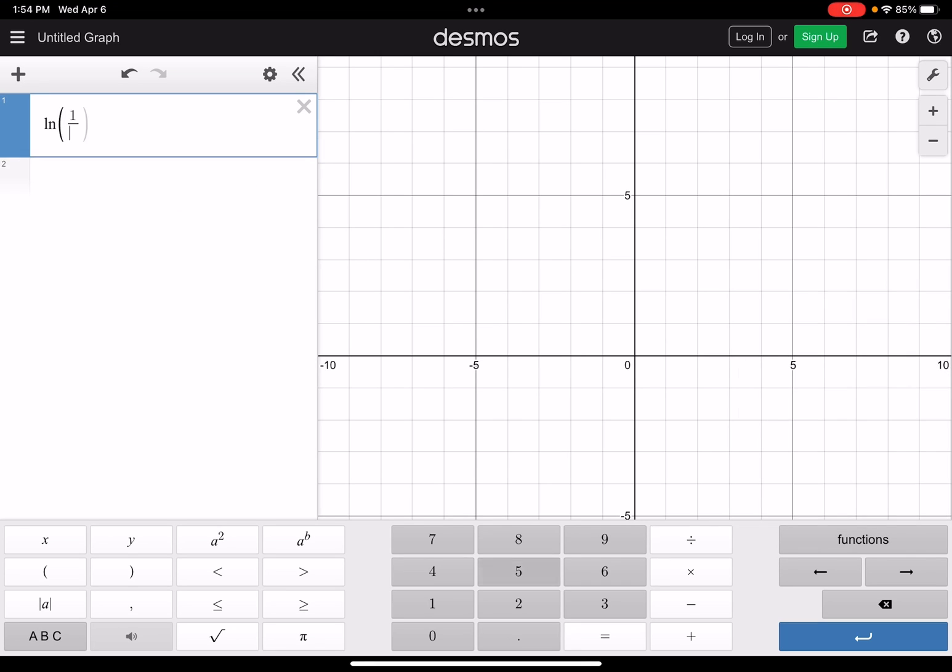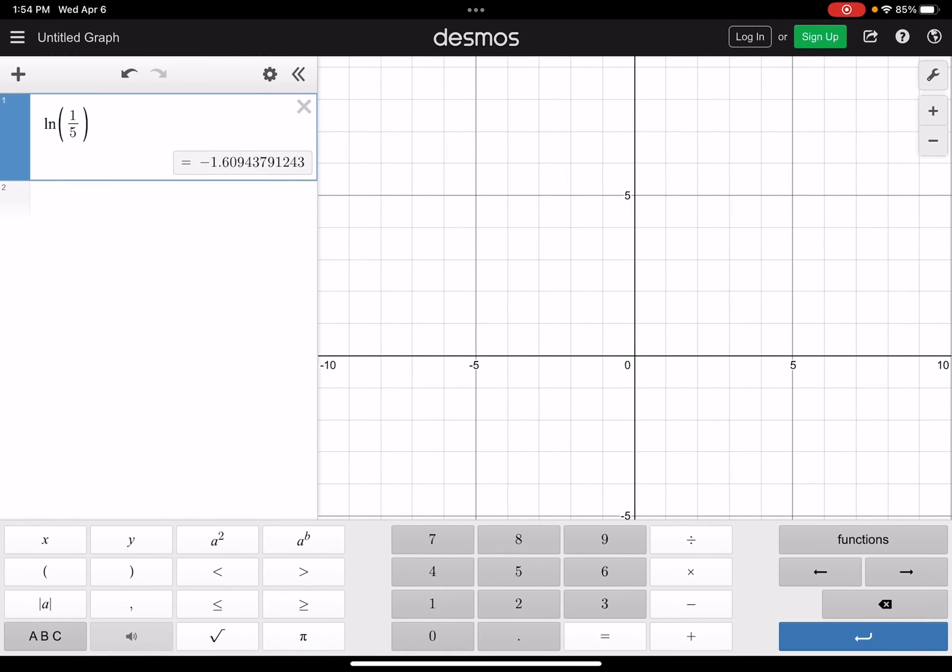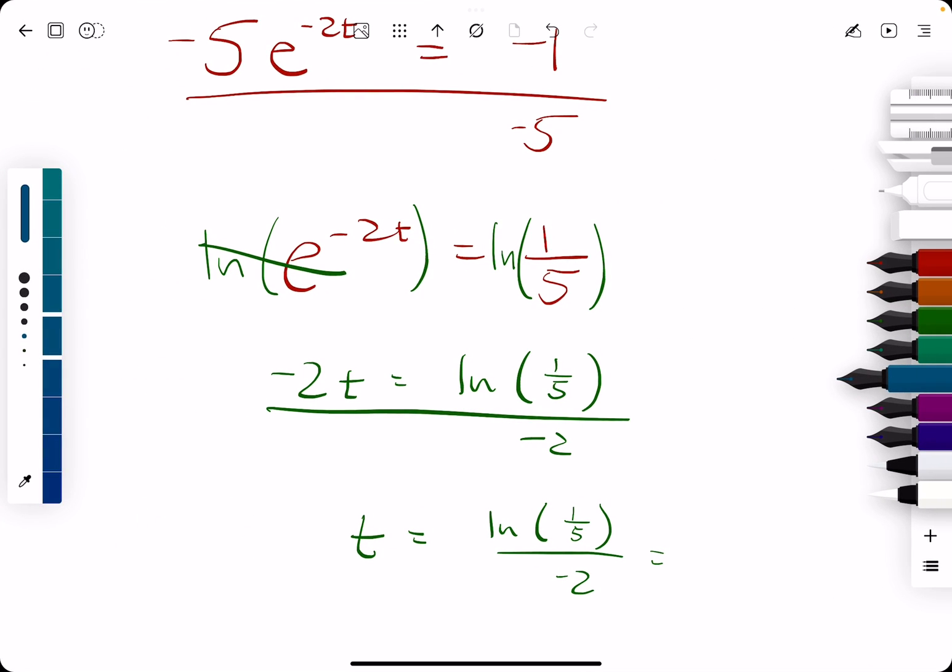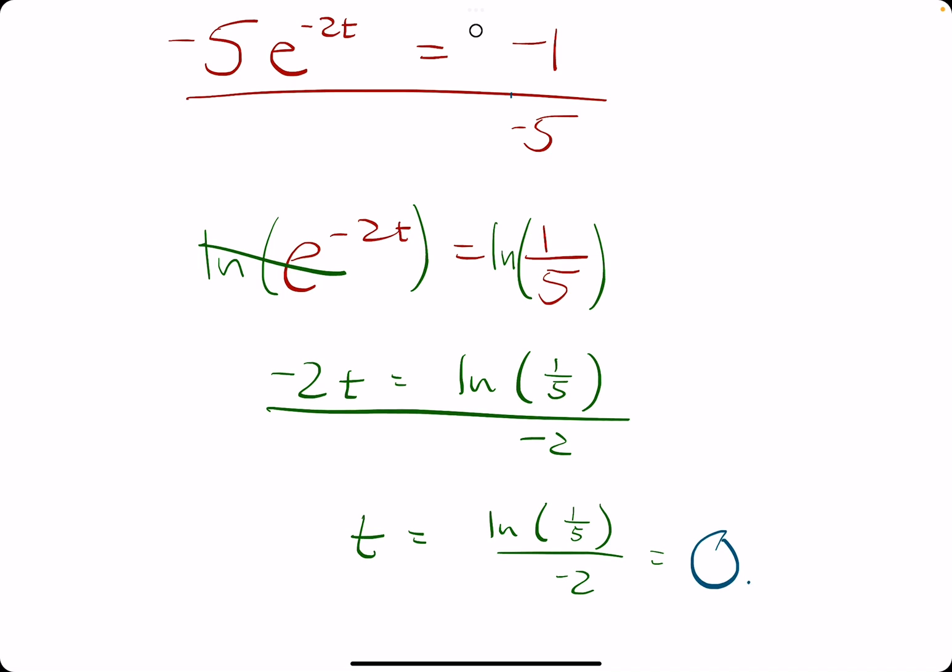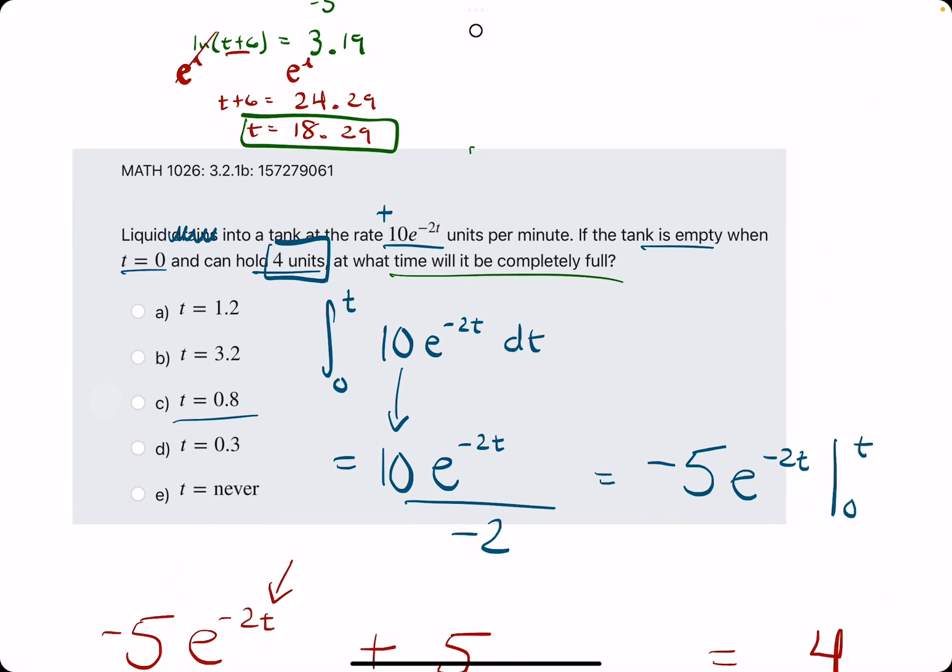Then dividing both sides by negative 2 should do the trick. Natural log of 1/5 should be a negative value, which means when we divide by negative 2, we get 0.8, approximately 0.8 for the time.